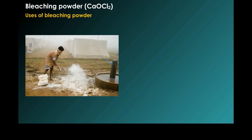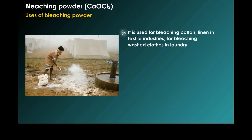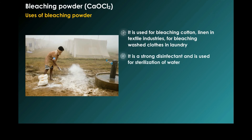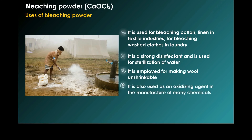Uses of bleaching powder: It is used for bleaching cotton and linen in textile industries, and for bleaching washclothes in laundry. It is a strong disinfectant and is used for sterilization of water. It is employed for making wool unshrinkable. It is also used as an oxidizing agent in the manufacture of many chemicals.